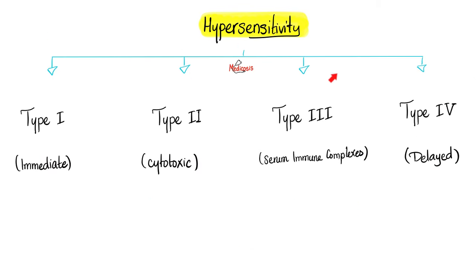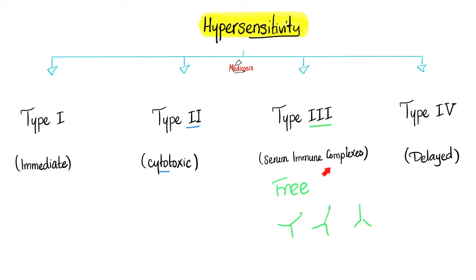Hypersensitivity: Type 1 is immediate, Type 4 is delayed. How about Type 2? Cytotoxic. Type 2 is cytotoxic. And Type 3 — you have free antibodies. What do you mean by free? The antibodies are floating in the plasma, floating in your blood. They are not bound to cells. You can describe Type 3 by three words: serum immune complexes.